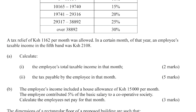Part B: the employee's income included house allowance of 15,000 shillings per month. The employee contributed 5% of the basic salary to a cooperative society. Calculate the employee's net pay for that month. So that is the question.